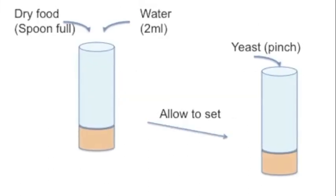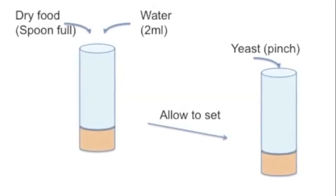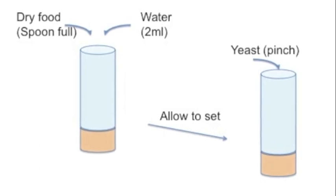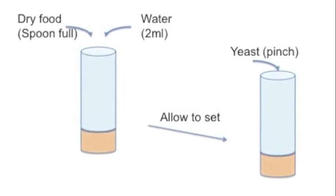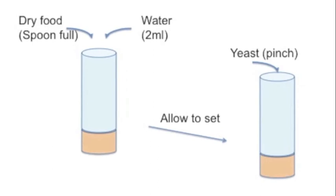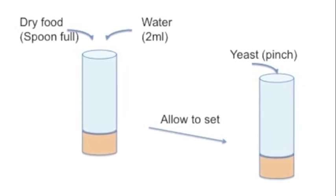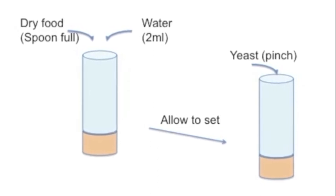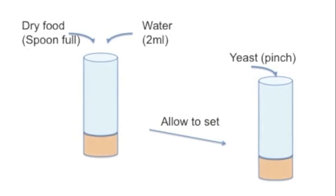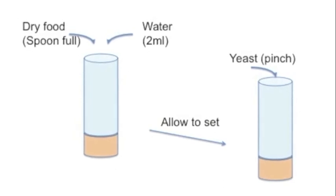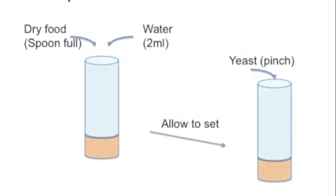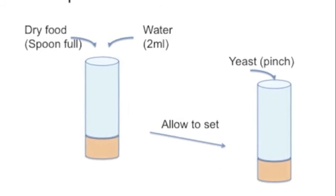Prepare the tubes where you will grow the flies. You will have to spoon some food into the tube, add some water, and mix quickly without getting the sides of the wall wet. Allow that to set, then add a little bit of yeast. The yeast is necessary for the larvae to grow.